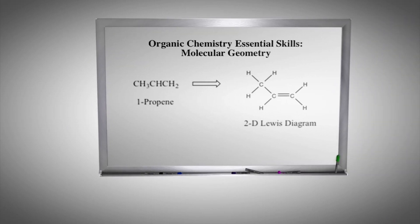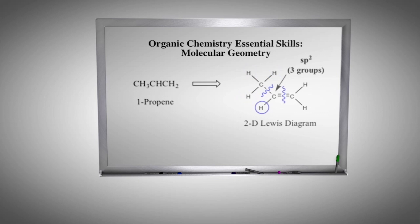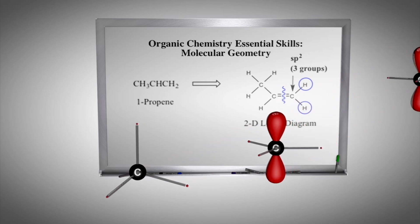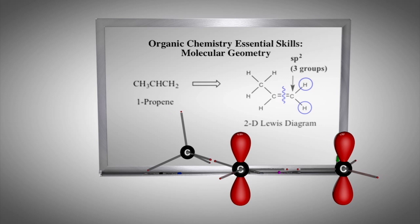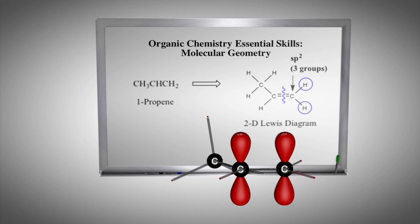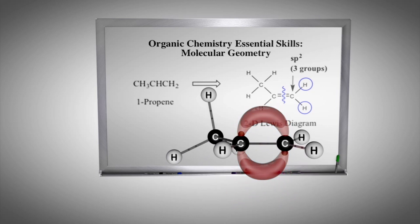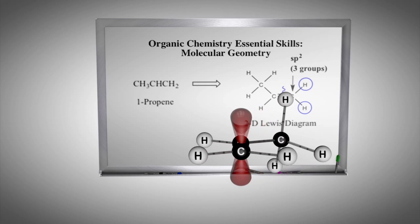A simple carbon compound that utilizes both sp3 and sp2 carbons is propylene. From the two-dimensional Lewis diagram, we see that by counting groups, we can deduce the hybridization for each carbon atom. Four groups employ the sp3 hybridized building block, and three groups employ the sp2 hybridized building block. Starting with one sp3 and two sp2 hybridized building blocks, we can build the molecule in three dimensions by forming the C-C sigma framework, then the six carbon-hydrogen sigma bonds, followed by the pi bond, affording the final three-dimensional molecule.